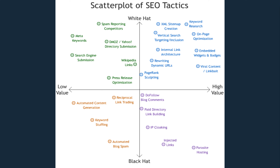It's important to know how people used to take advantage of the system through what we call black hat SEO. White hat is legal; black hat is illegal and bad. Essentially, by parasite hosting — hacking a website and injecting code on the back end so that your spammy website rises in search rankings. You might also see automated blog spam or keyword stuffing, where a website repeats a certain keyword over and over — like 'veterinarian, veterinarian, veterinarian' — then redirects to your own site. That's looked at very poorly by search engines when they catch it.